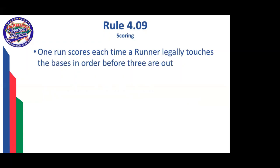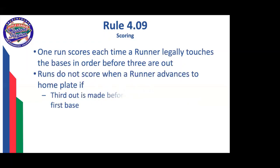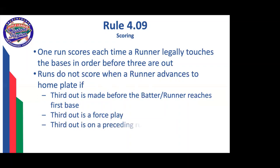Every time a runner legally touches all four bases in order before three are out, one run will score. Runs don't score if the third out is made before the batter-runner reaches first base, if the third out is a force play, or if there's a third out on a preceding runner due to a proper appeal. For example: if the runner on second missed third and scored, and the runner on first then scored, but the appeal at third base was the third out of the inning, neither the appealed runner nor the runner from first would score.